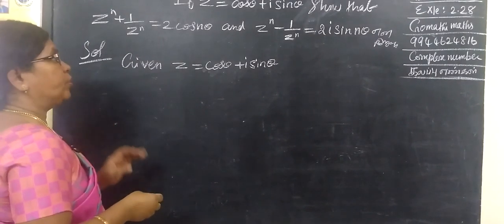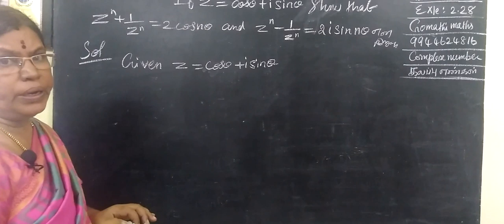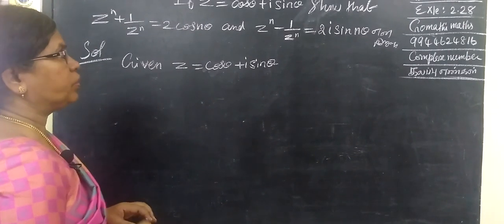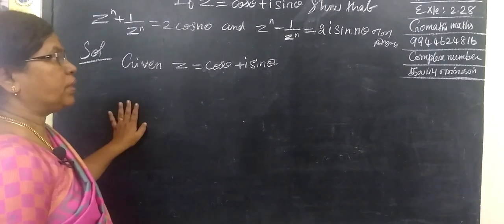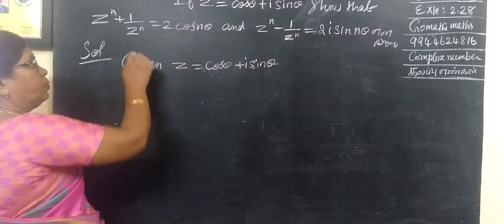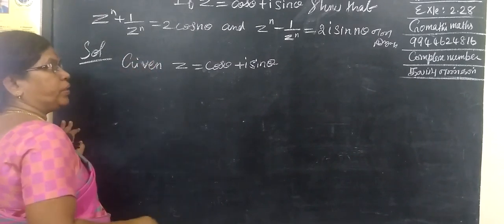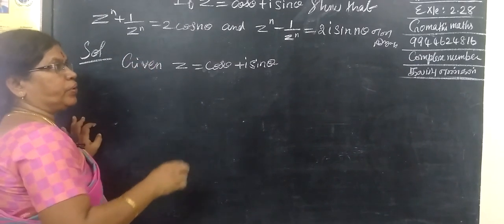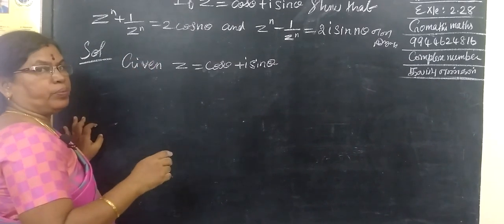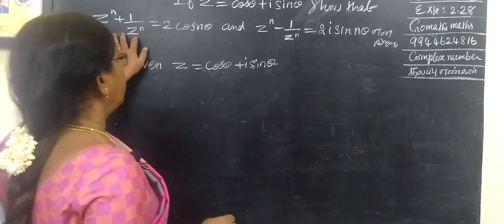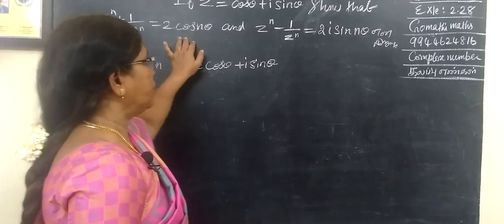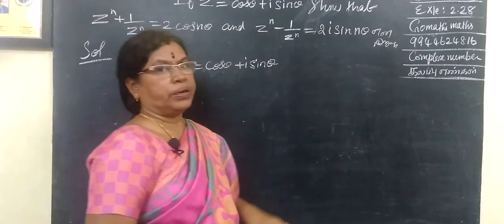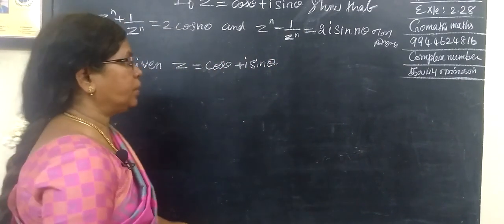Example 2.28 from 12th Maths. If z equals cos theta plus i sin theta, then z power n plus 1 by z power n gives the real part, and z power n minus 1 by z power n gives the imaginary part.